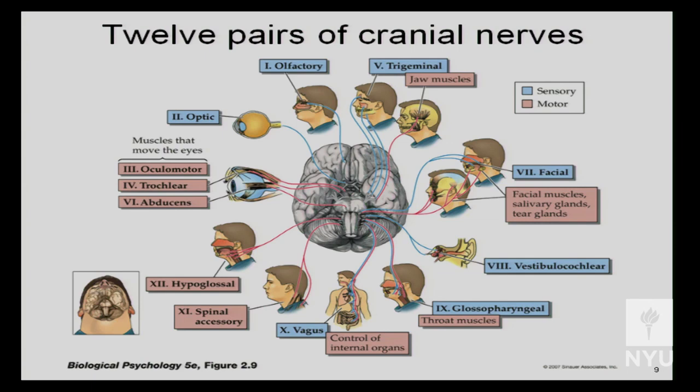Nerve 5 is a very big, mixed nerve — our first mixed nerve — called the trigeminal nerve. It gives you sensory information to the face and also motor information to the jaw. The jaw muscle is one of the strongest muscles in your body. Damage to the trigeminal will cause motor problems with both speaking and eating.